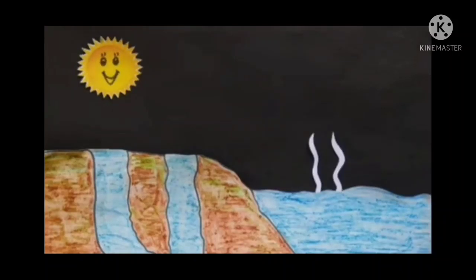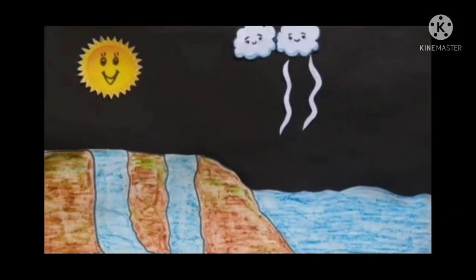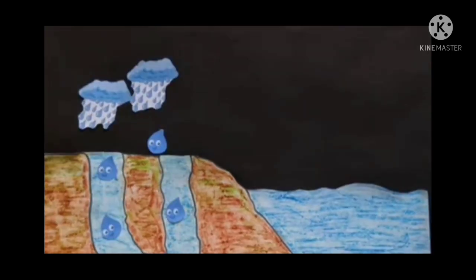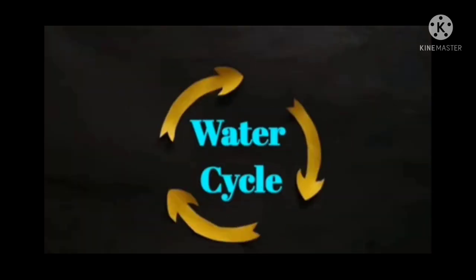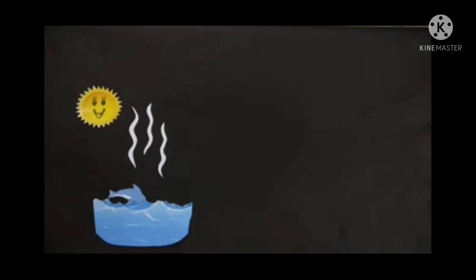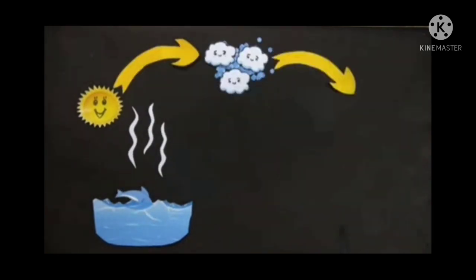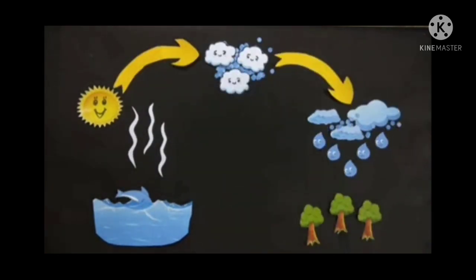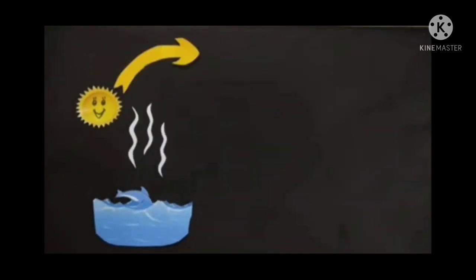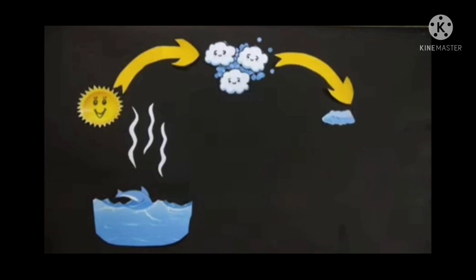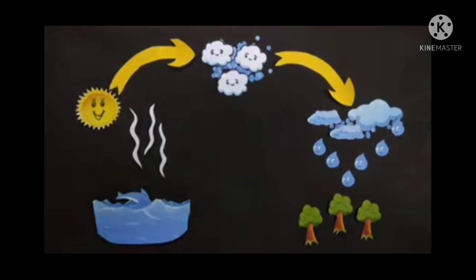So the rain water gets collected, the sun shines again, the water gets heated again, the clouds form again, and the rain happens again. Just like a cycle goes round and round, the water cycle also goes round and round. The continuous journey of water in nature from earth to clouds and back to the earth is called the water cycle. It includes evaporation, condensation, and precipitation.